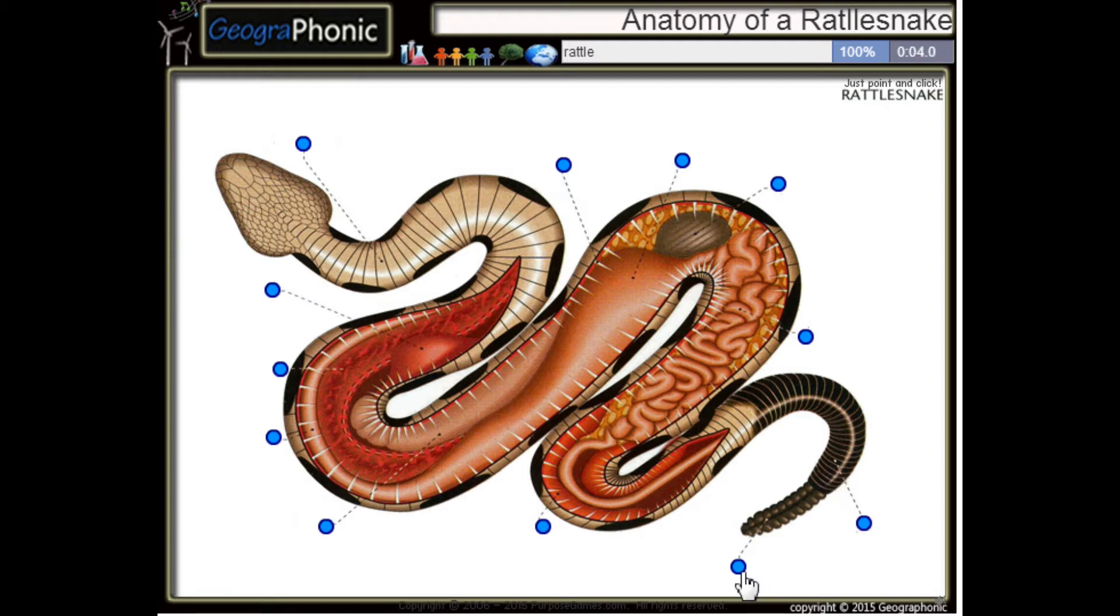This is the rattle of the snake. Here we see a belly scale. This is of course its tail.